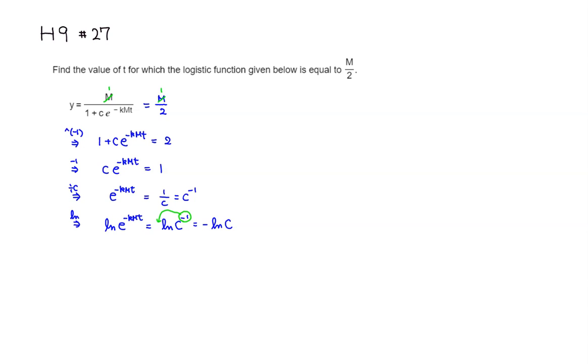And also we know that the natural log and exponential function, those are inverses of each other. So we can cancel those guys out. So you have negative kmt is equal to negative natural log of c.